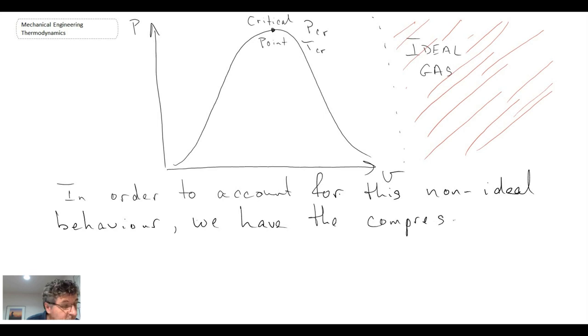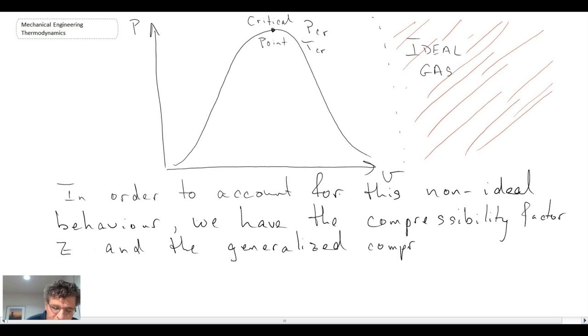What we do is we introduce what is referred to as being a compressibility factor, Z, depending where you are. And then we have compressibility charts that we can look up. If we know the critical pressure and temperature, then we can get a Z compressibility correction value. And we can then adjust the ideal gas equation to look something like this, where the Z compressibility factor is the actual specific volume divided by the ideal specific volume. So that's the compressibility correction factor.